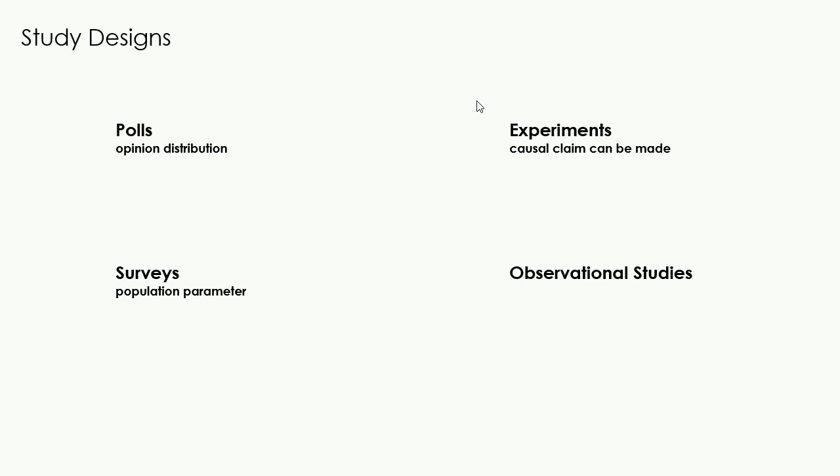Observational studies are studies in which a researcher attempts to understand the effect a variable may have on something, but the researcher cannot control the conditions in the study. The researcher can observe what is going on but cannot control what is happening.